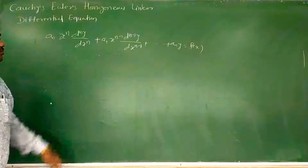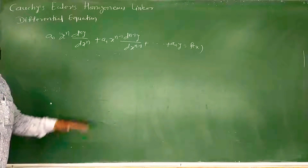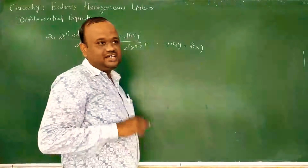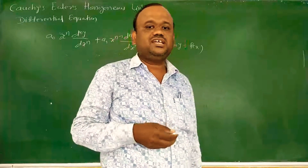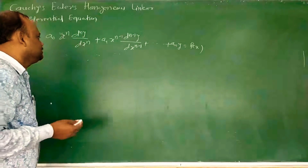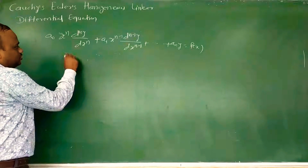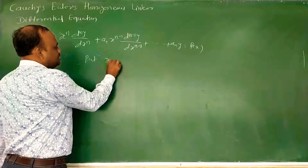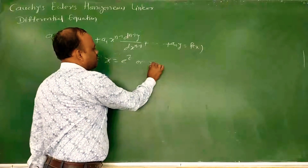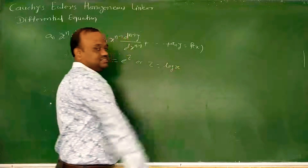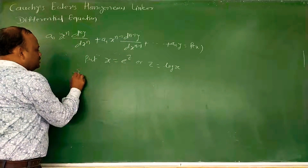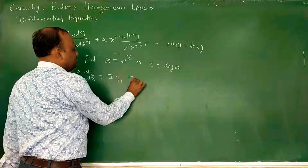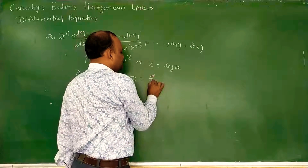Now how do we find the solution of such type of differential equation? We have to convert this Cauchy's Homogeneous Linear Differential Equation to a linear differential equation with constant coefficients, and then we can write the solution as y = CF + PI. For conversion, we use the substitution x = e^z, or equivalently z = log(x). Then x(dy/dx) = D y, where capital D stands for d/dz.